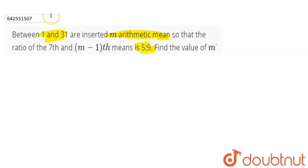First of all, we will write down the solution. Let a₁, a₂, a₃, ..., aₘ be the arithmetic means between 1 and 31. So the AP series will be 1, a₁, a₂, ..., aₘ, 31.